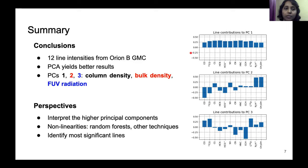And looking at the line contributions, the individual line contributions to each of these components, we see that they trace respectively the column density, the bulk density, and the FUV radiation that is characteristic of PDR regions.